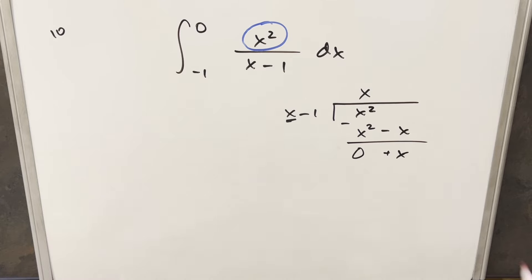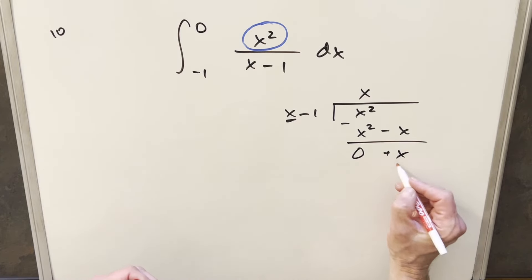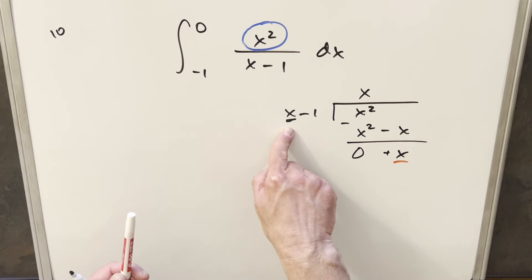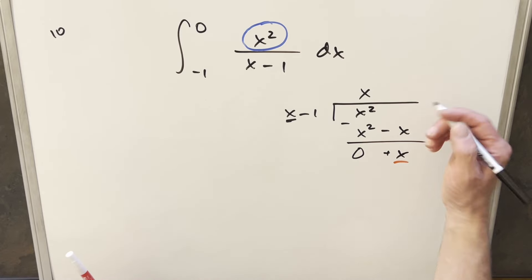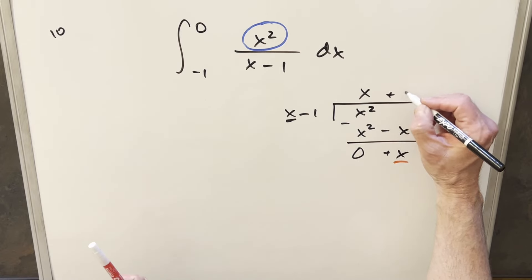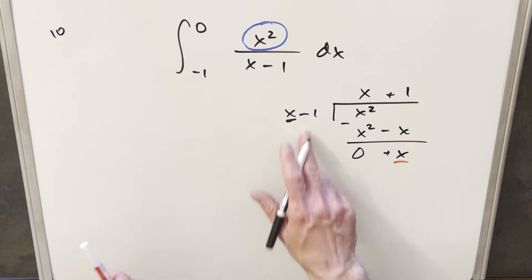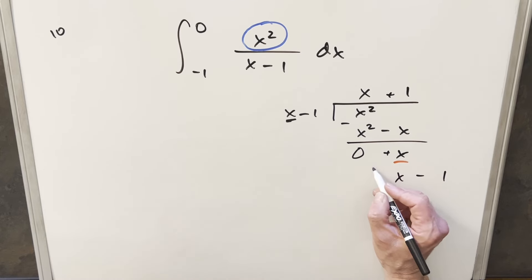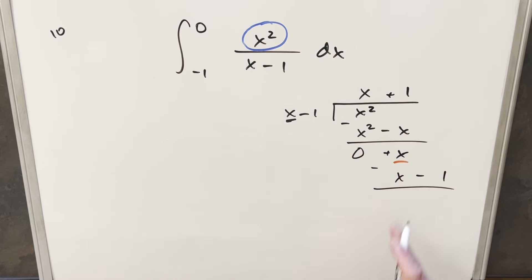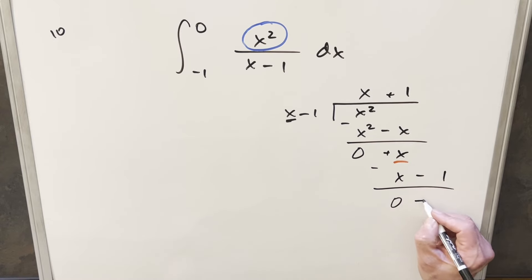Now we try to divide again — divide x minus 1 into x. Looking at the highest degree term, if I multiply by 1, I put a plus 1 there. Then 1 times x minus 1 gives x minus 1. Subtracting the x's gives 0, and minus times minus gives plus 1 as the remainder.